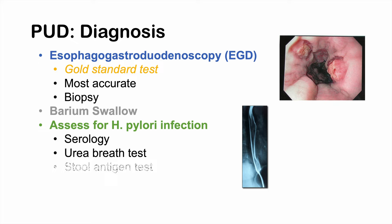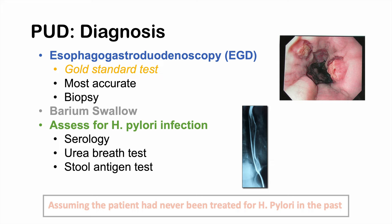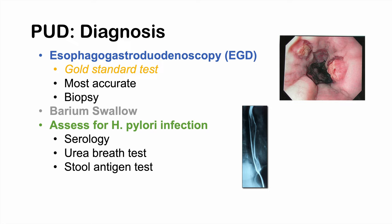Serology, or antibody testing, indicates that a patient has had H. pylori at some point in their life, not necessarily a current infection. The stool antigen test is more useful for detecting a current infection. Typically, serology is performed first; if antibodies are detected, the patient is treated and then undergoes a stool antigen test to confirm eradication. Histology from biopsy can also directly identify H. pylori in the tissue sample.